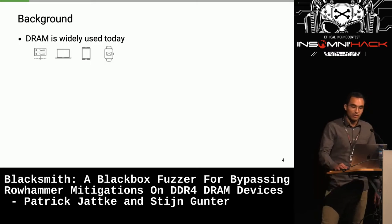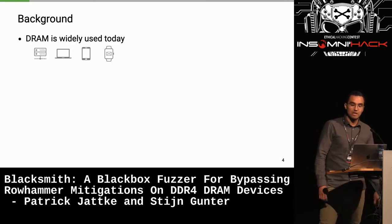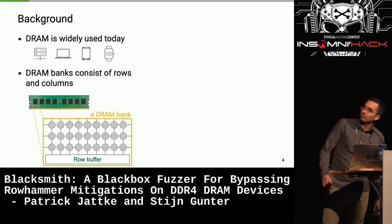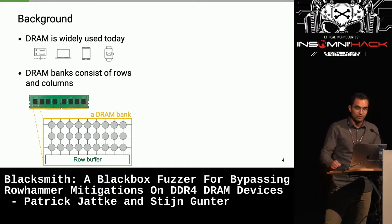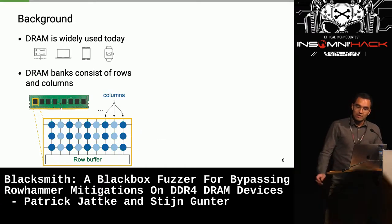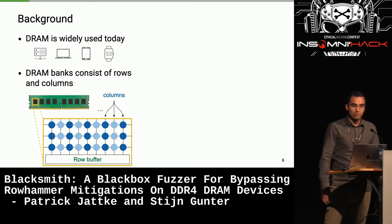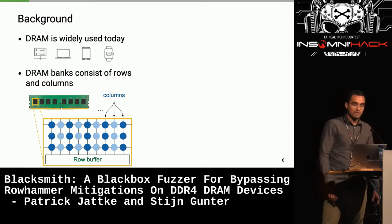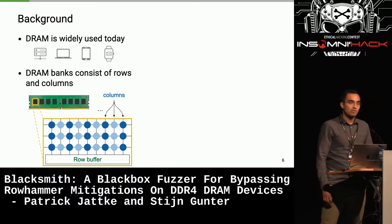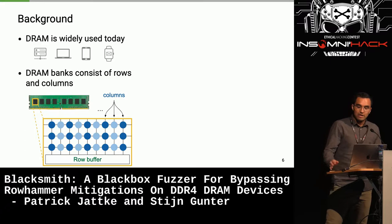Before talking about Blacksmith, let me give a brief background on DRAM — dynamic random access memory — which is widely used today in servers, notebooks, smartphones, and smartwatches. A PC DIMM is equipped with multiple DDR4 DRAM chips, each containing multiple DRAM banks organized in a matrix-like structure of rows and columns. Each DRAM cell consists of an access transistor and a capacitor holding a single bit, and due to the dynamic nature of DRAM, cells must be refreshed — for example, each row every 64 milliseconds in DDR4.